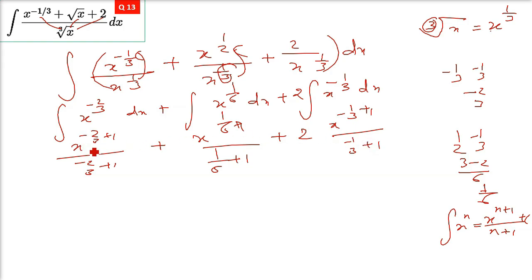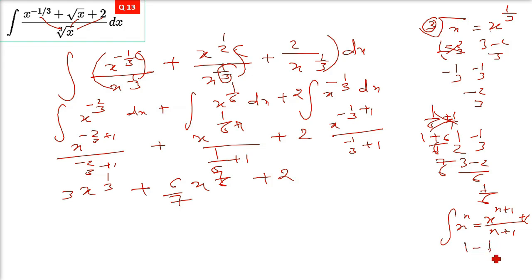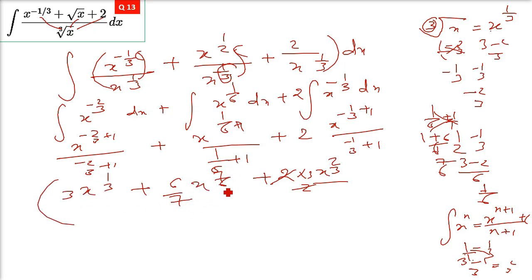Continuing integration: x raised 1 by 6 plus 1 is 7 by 6, so x raised 7 by 6 divided by 7 by 6 gives 6 by 7 times x raised 7 by 6. For twice of x raised negative 1 by 3: negative 1 by 3 plus 1 is 2 by 3, so x raised 2 by 3 divided by 2 by 3 gives 3 by 2 times x raised 2 by 3, and 2 gets cancelled. Final result: 3x raised 1 by 3, plus 6 by 7 times x raised 7 by 6, plus 3 times x raised 2 by 3, plus constant of integration.